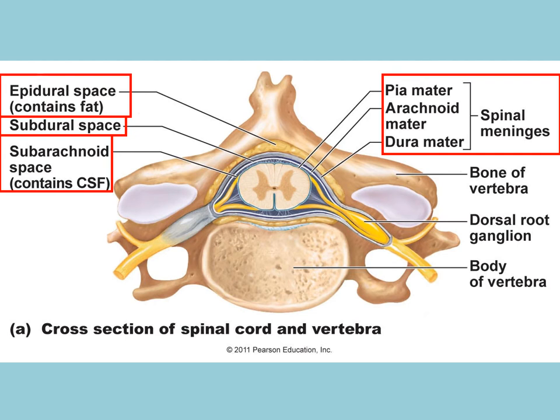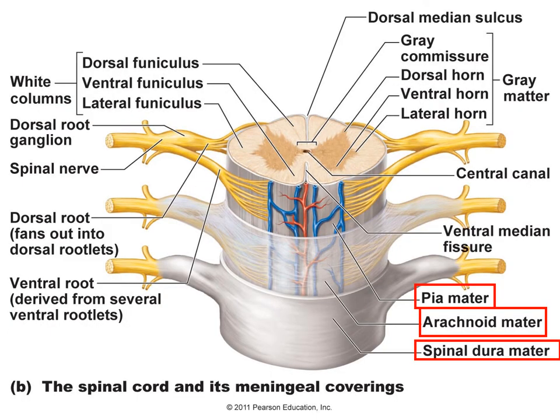Ganglia is where you have a group of cell bodies in the peripheral nervous system. From this cross section, you can see the central canal. In terms of the layers of the meninges, from inside out you have the pia mater, the arachnoid mater, and then the dura mater.